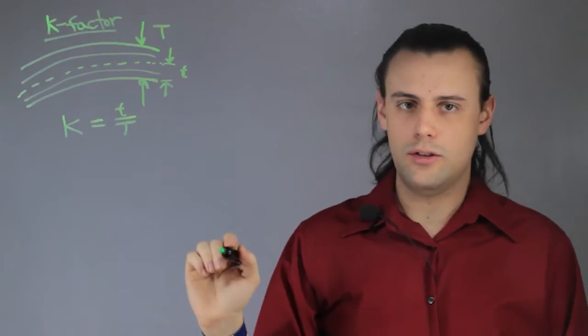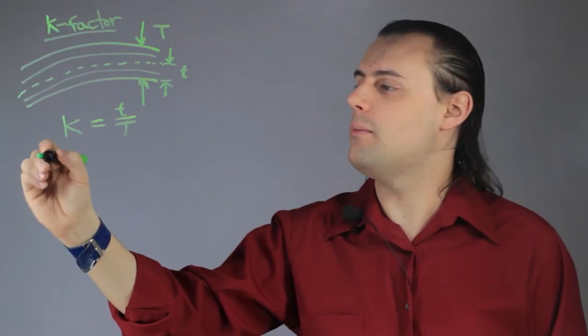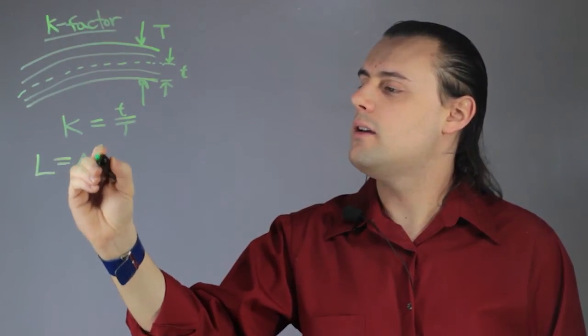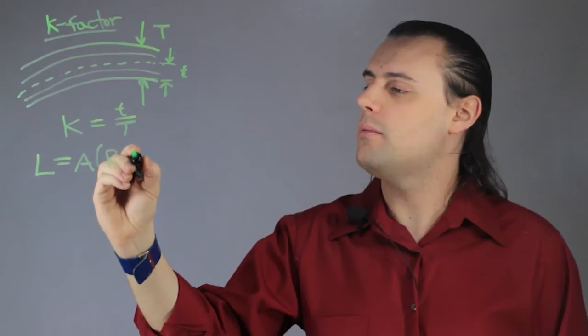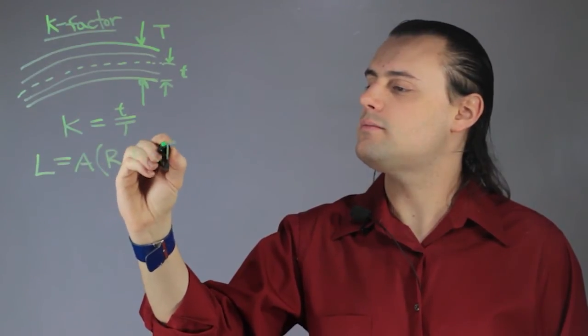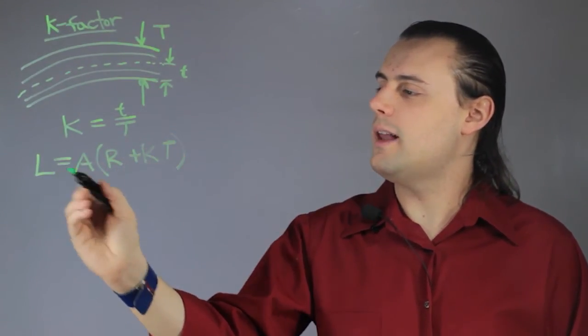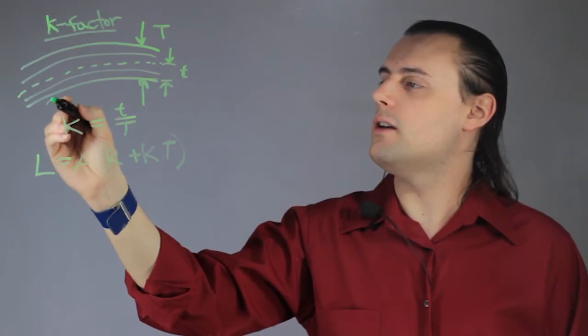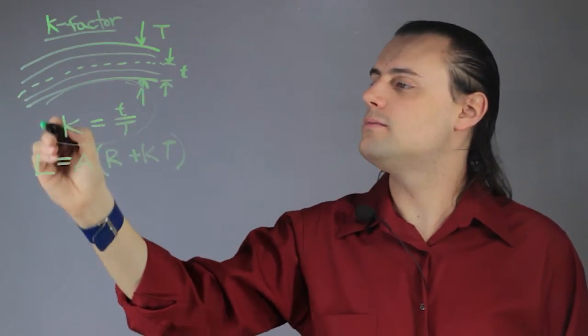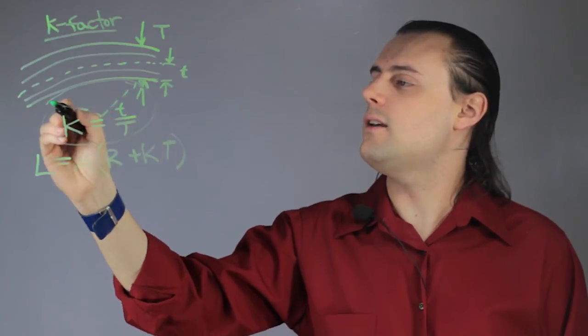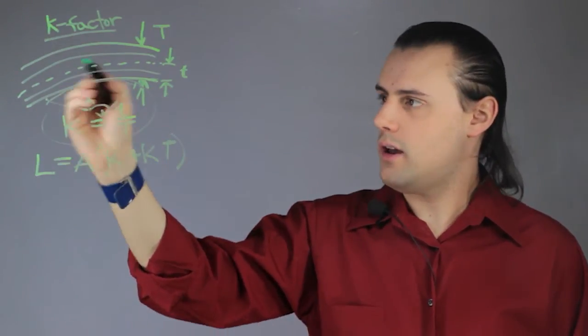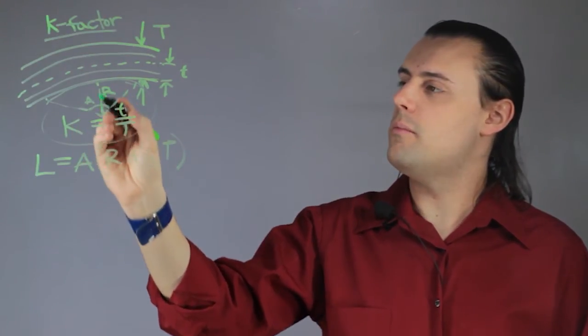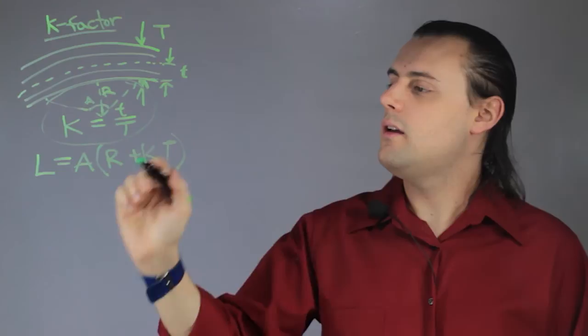Now we can use the equation for the bend allowance. The bend allowance is given by L equals A times capital R plus k times T. L is the bend allowance, A is the angle, so if we draw a circle, this is the angle A, and this would be R, our minimum bend radius.